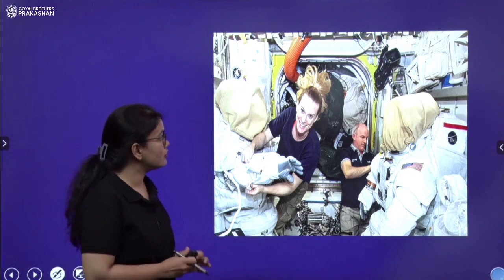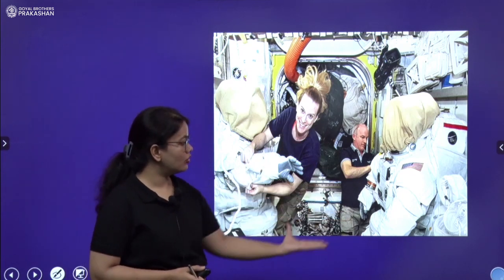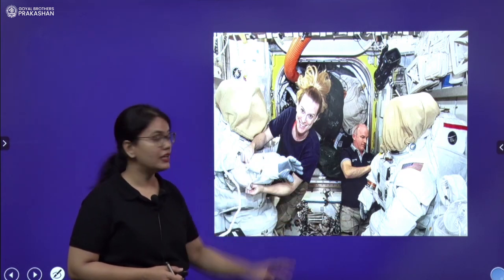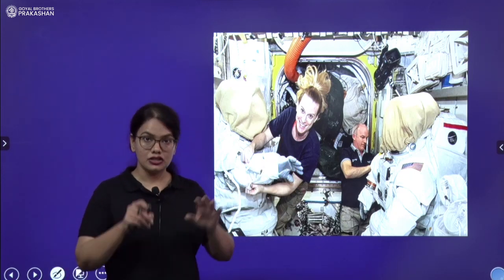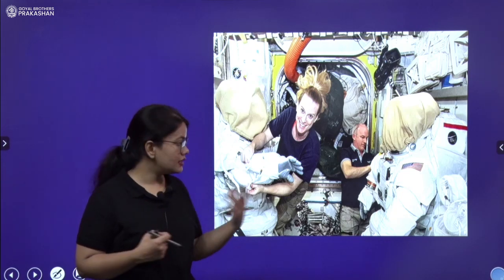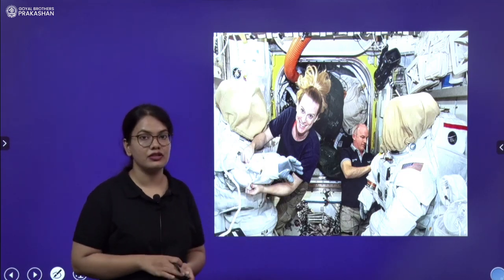Look at the other image. Here also, you can see astronauts, they are almost flying in the spaceship. They are not able to even sit. They have to tie themselves to the belt so that they can sit. Otherwise, their bodies are flying inside the spaceship.